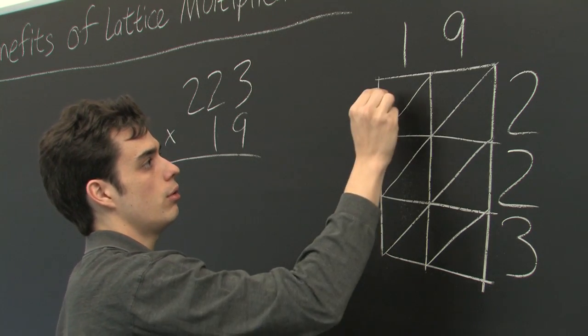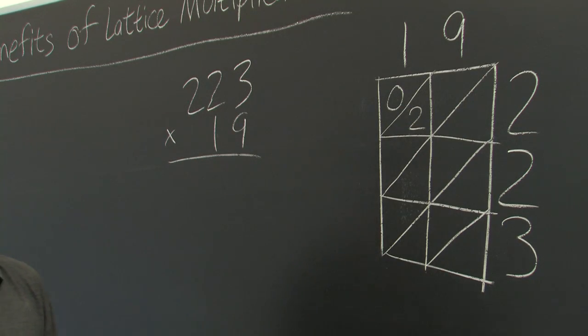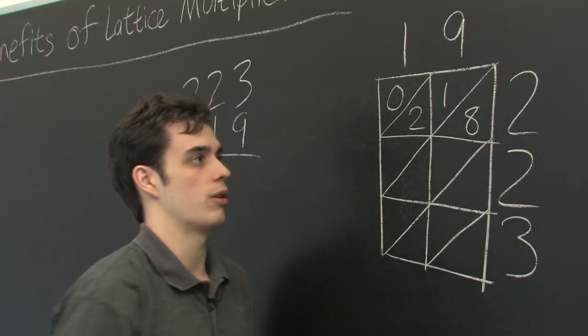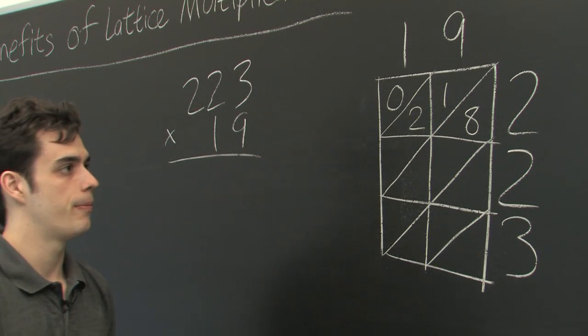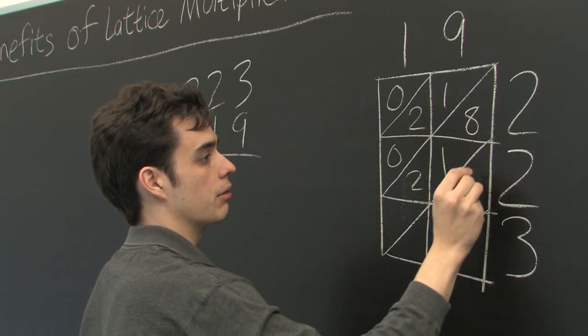Here 1 times 2 is 2. We'll express that as 0 and 2. 2 times 9 is 18. We'll express that as a 1 and an 8 naturally. Since it's the same number we can simply copy down our results.